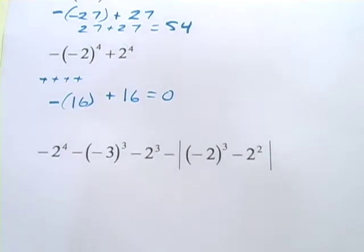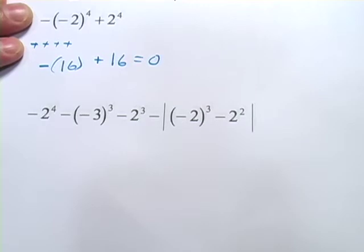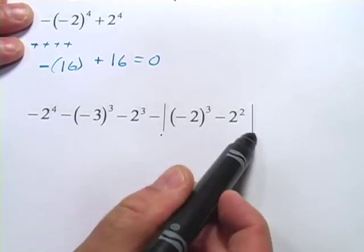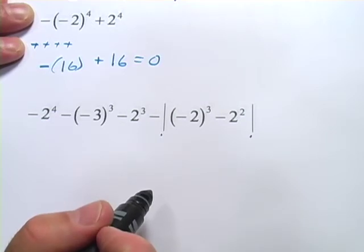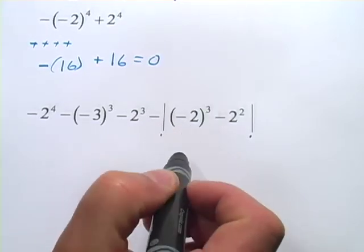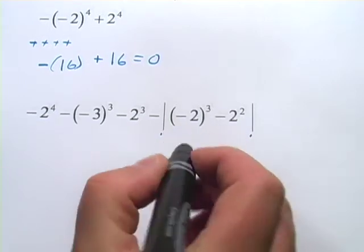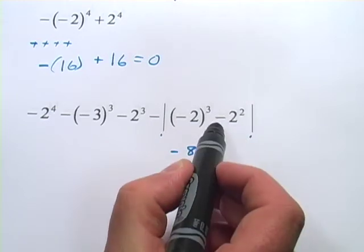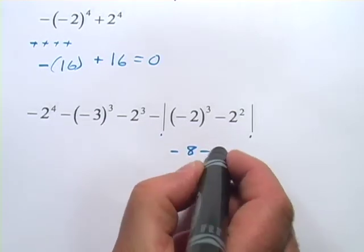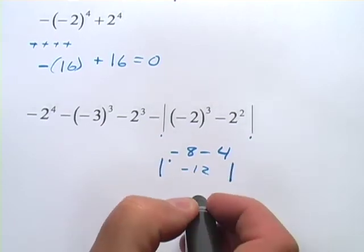These start getting more complicated with a big problem like this. My advice is to take it a step at a time and rewrite as you go. First I notice we've got an absolute value, so I'll work on that chunk first. Inside there I've got parentheses with negative 2 to the third power. 2 to the third is 8, and the negative sign stays negative because it's an odd power — so that's negative 8. The second power outside doesn't affect the negative sign. 2 squared is 4, so we have negative 8 minus 4, which is negative 12. Taking the absolute value gives us 12.